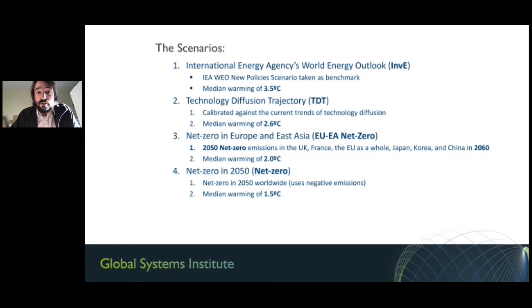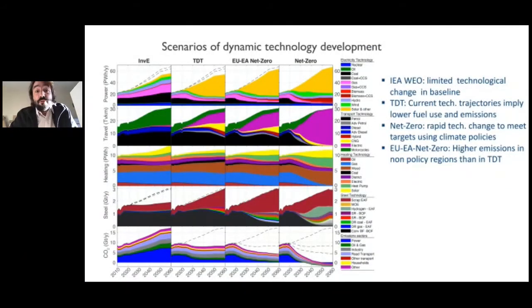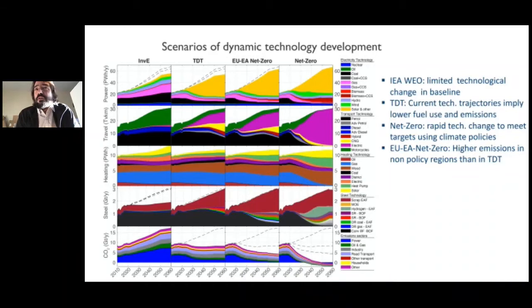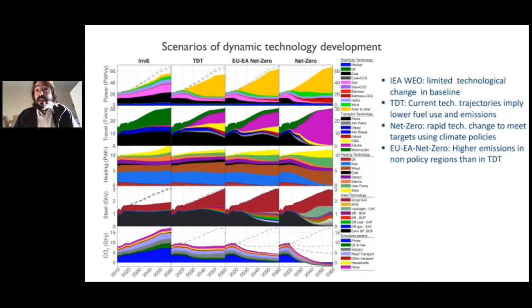Here are some technology projections for the four scenarios, showing power generation, travel, heating, and steel, with total industrial emissions below. The IEA investor expectations scenario expects growing markets for fossil fuels all the way to 2050. But looking at rapid change in technology, low-carbon tech—solar PV, electric vehicles, electric heat pumps—is already taking a very large chunk of markets, and in an EU/East Asia net zero scenario, this is accelerated considerably.